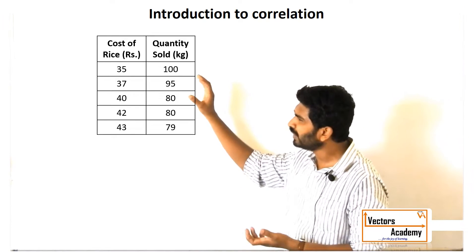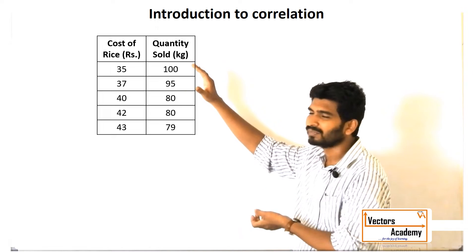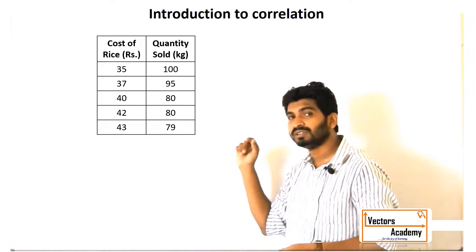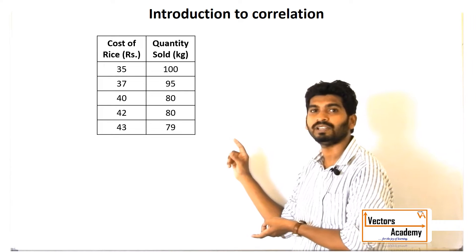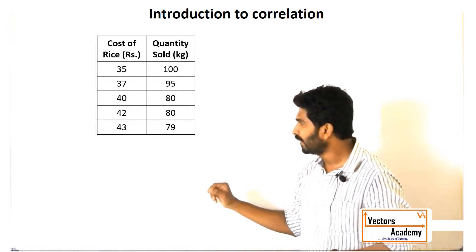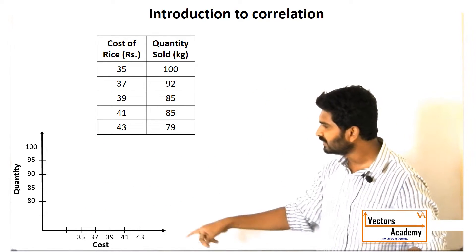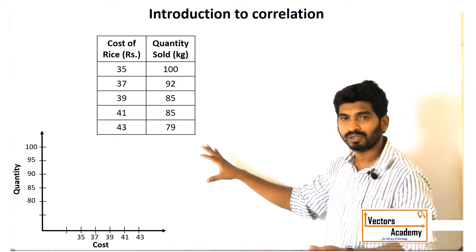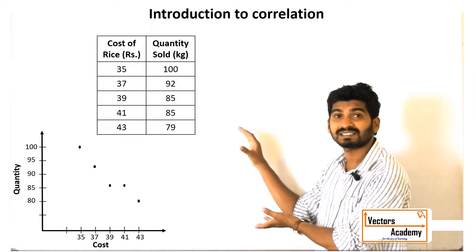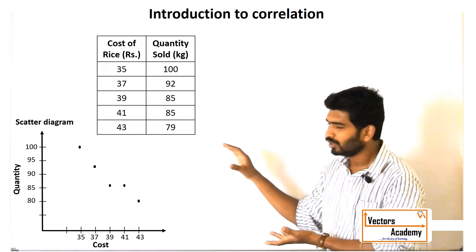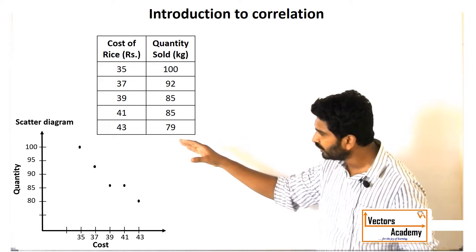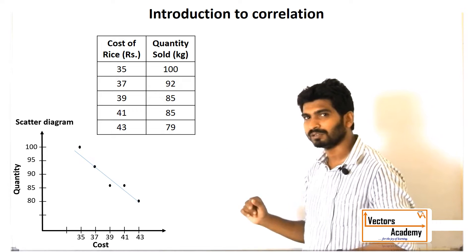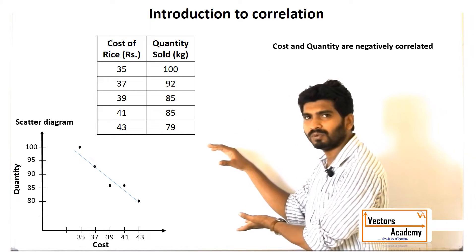If I look at the graph properly, I can see when the price increases, the quantity sold decreases — this is called negative correlation between the two variables. The x-axis denotes the price, the y-axis denotes the quantity sold. If I plot all these points, this graph is called a scatter diagram. Once you have made a scatter diagram, you can see the graph goes on decreasing as the price increases, so this is called negative correlation between the two variables.